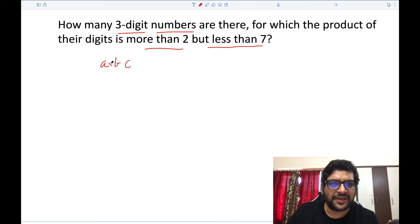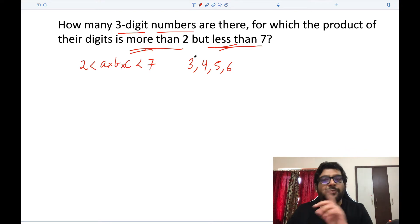What you are given is a times b times c should be more than two or it should be less than seven. So that means your value of a times b times c can be what? It can be three or four or five or six. These are the only possibilities. It cannot be seven, it cannot be two because it's clearly given more than and less than. If it was more than or equal to, then two would be considered. Less than or equal to, then seven would be considered, but that is not the case.